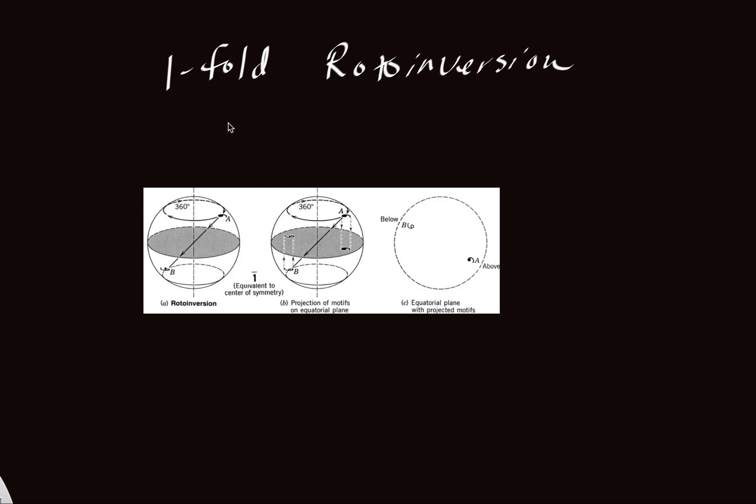So here we're going to look at one-fold rotoinversion. The way that is symbolized is as a bar one. This is to distinguish it from a simple one-fold rotational axis.